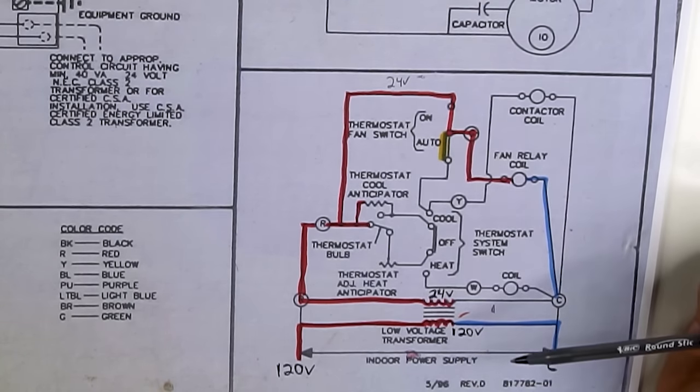Right here we have our thermostat bulb — one of those bulbs with mercury in it that reacts to the temperature in the room. If it gets colder or hotter, this thing moves up and down accordingly. It's similar to that temperature switch we went over earlier. It also has a cool anticipator and a heat anticipator that you can adjust on the heat cycle. I won't go into all of that in this video since it's too much to cover.